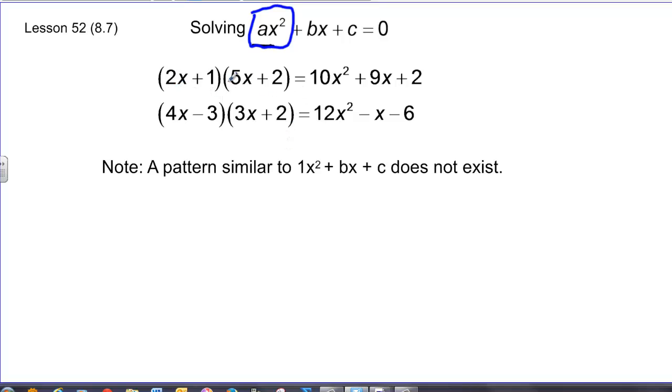If you look at the factored form of the polynomial in relationship to the multiplied, foiled out form, you'll notice the relationship that we had earlier with our 1x squared plus bx plus c doesn't exist. So in other words, what multiplies to negative 6 may in this case equal negative 1, but here what multiplies to 2 does not equal 9. So it's not always going to be the same case.